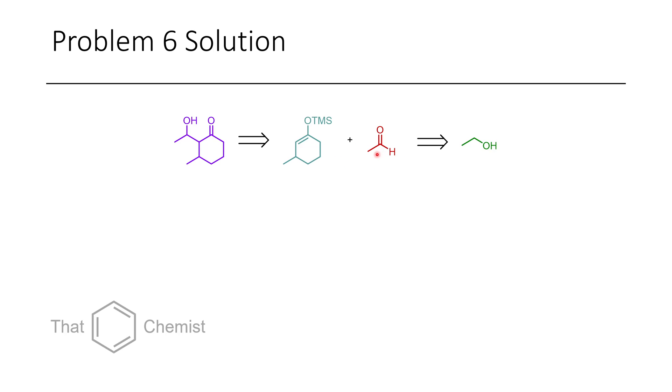We also know that this could be derived through a conjugate addition with a cuprate, like a Gilman reagent, and a Gilman reagent could be derived from bromomethane. Finally, the cyclohexenone could be derived just through an aldol condensation, a self-condensation of this reaction, an intramolecular aldol condensation.